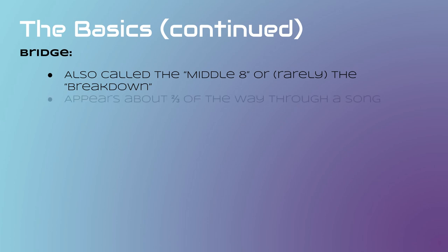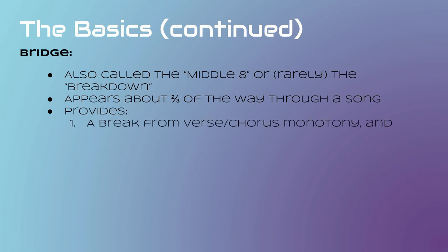Instead of truly falling in the middle of a song, the bridge almost always can be found about two-thirds of the way through. If I were to open up SoundCloud, YouTube, or Spotify and choose a song and use the navigation slider to go to about two-thirds of the way through, I can almost guarantee that would fall within the bridge. And the reason why has to do with one of its functions. The bridge provides a break from the alternating verse-chorus-verse-chorus dynamic that has prevailed up to that point.